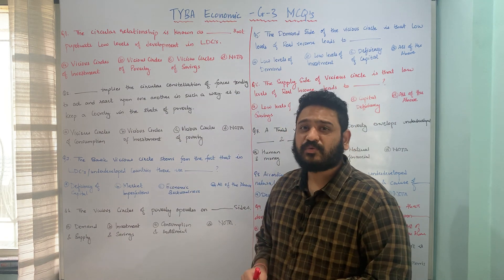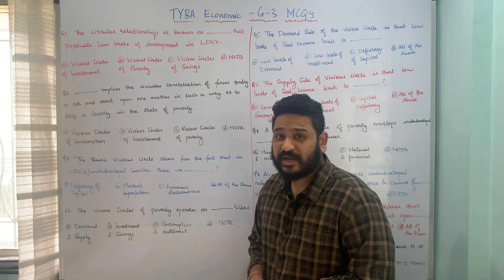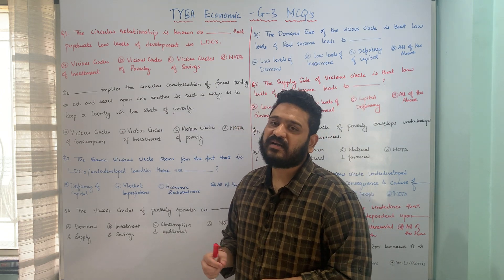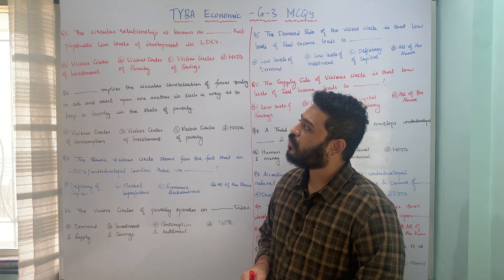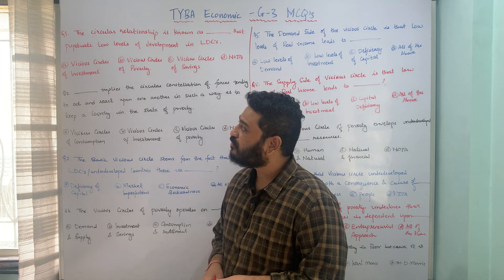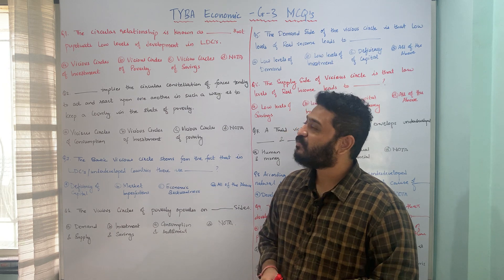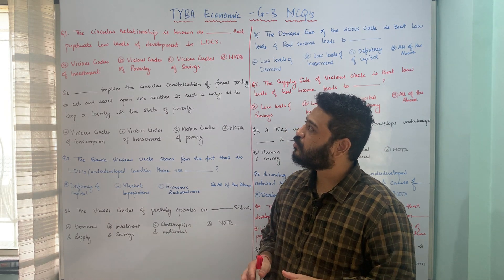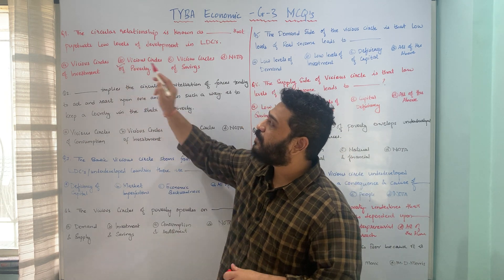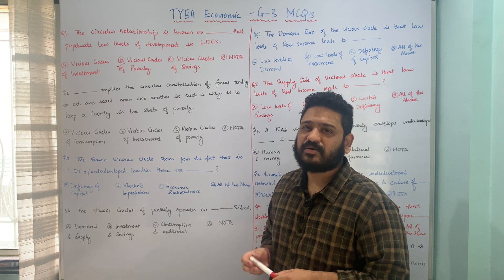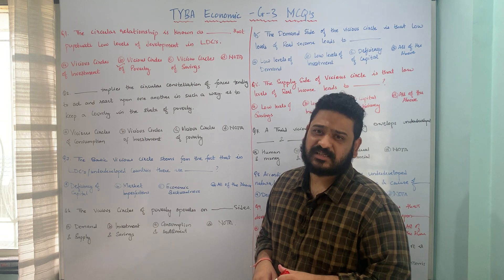The first question is: the circular relationship known as dash perpetuates low levels of development in underdeveloped or least developed countries. What do you call that circular relationship? Option A: vicious circles of investment. Option B: vicious circles of poverty. Option C: vicious circles of savings. Option D: none of the above. The correct answer is option B — vicious circles of poverty.